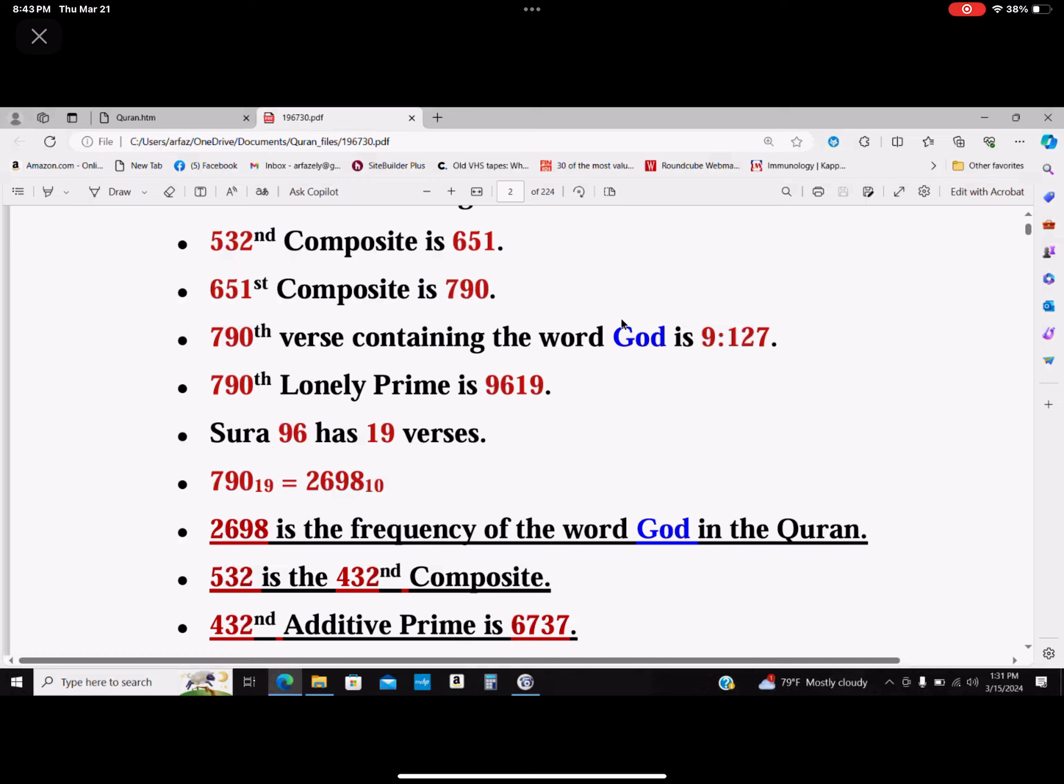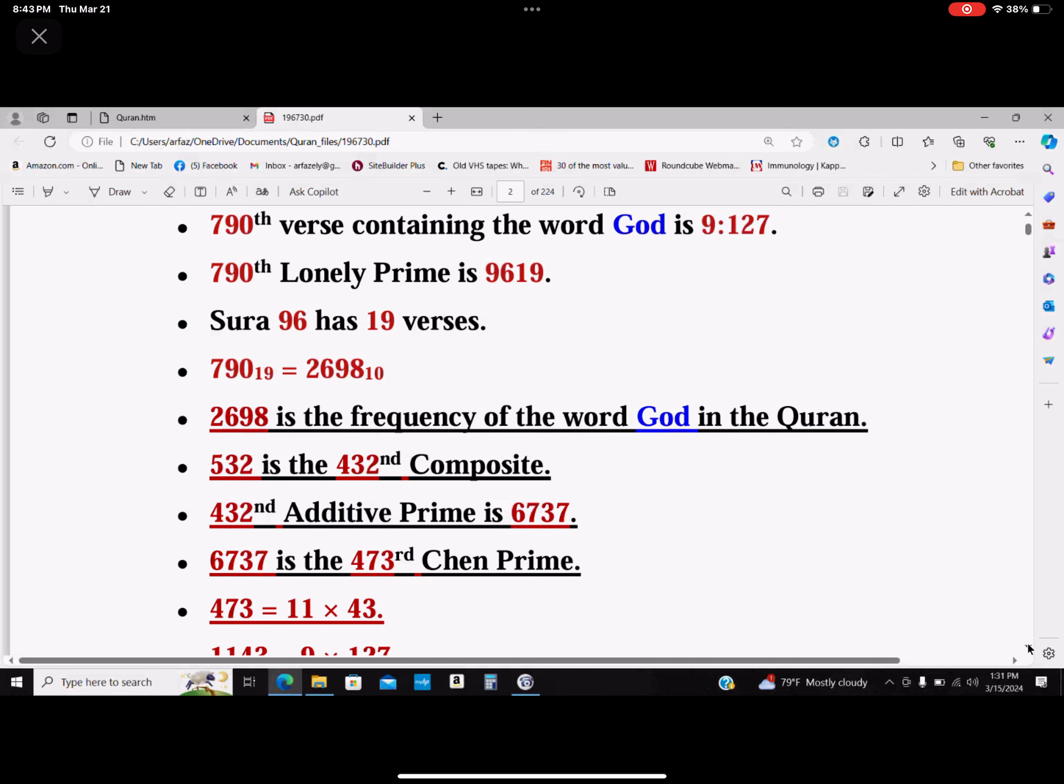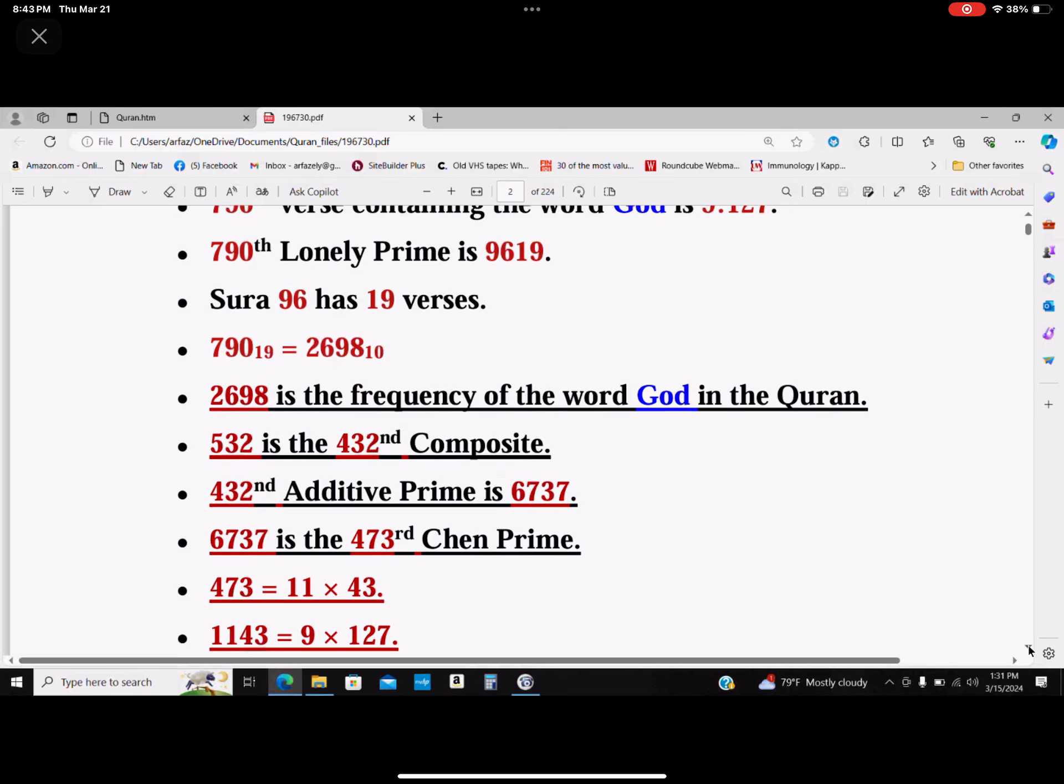532 happens to be the 432nd composite. The 432nd additive prime is 6737. 6737 happens to be the 473rd Chen prime. 473 is 11 times 43, and 1143 is 9 times 127. So 6737 is part of the 149th cousin primes. Cousin primes are a combination of Gaussian composites and Gaussian primes.